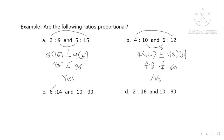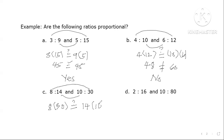Let's go to letter c. Is the product of 8 and 30 equal to the product of 14 and 10? So 8 times 30 — is that equal to 14 times 10? 14 times 10 is 140. They are not equal, so the answer is no.